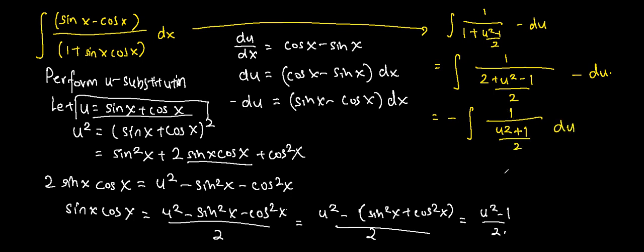We bring the 2 up to the numerator, so we get negative of the integral of 2 over u squared plus 1 du.